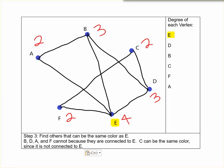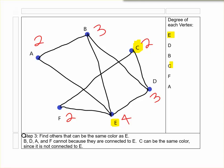In step 3 we're going to look for other vertices that can be the same color as E. So what we're going to do is work down the list from highest to lowest and check if any of them can be the same color. Well D, B, A, and F cannot be because they're all connected to E. Remember any two points that are connected cannot be the same color. However C is not connected. So I'm going to go ahead and make C yellow as well and I'm going to highlight it so I know that I am finished with point C.